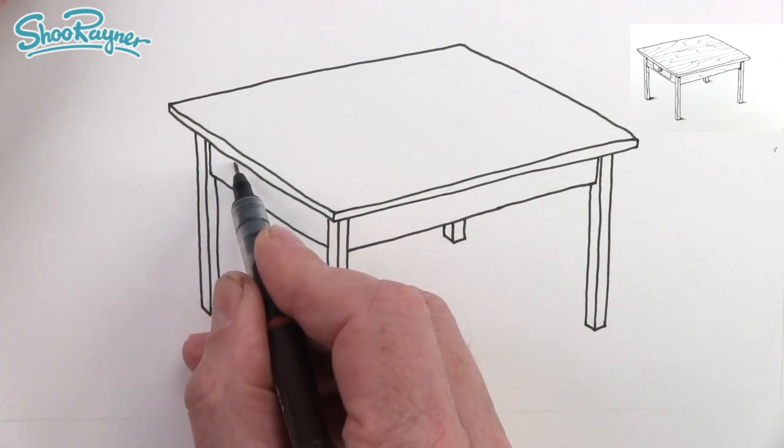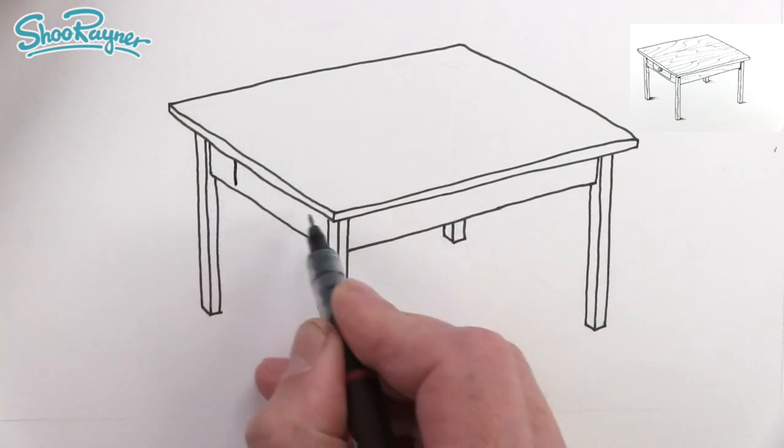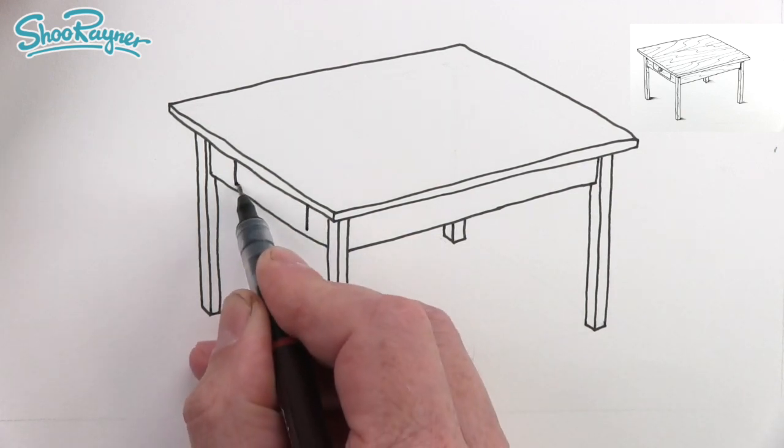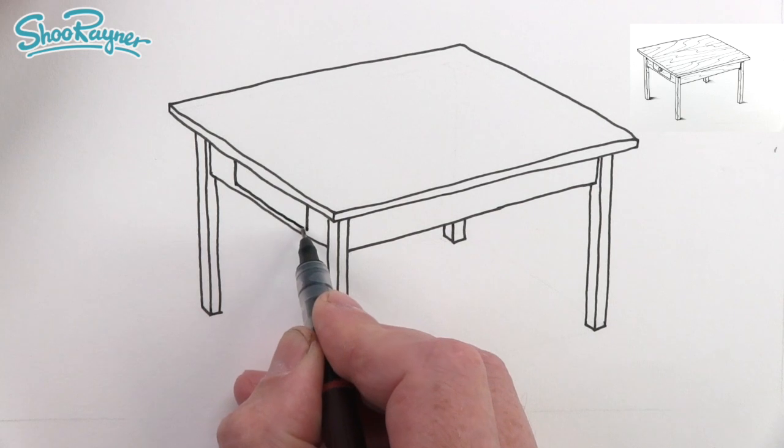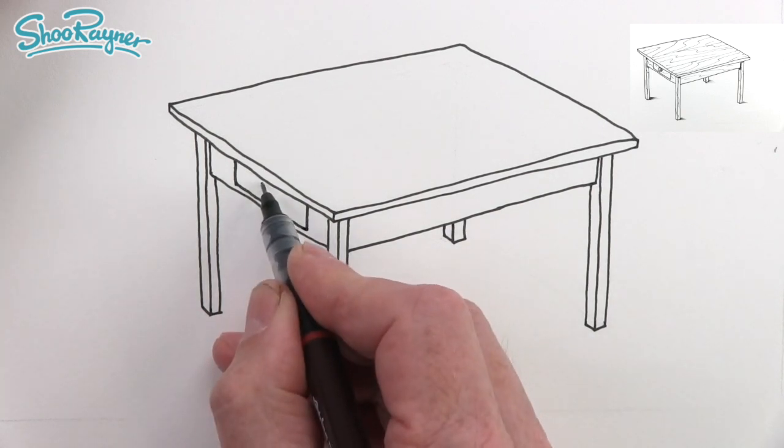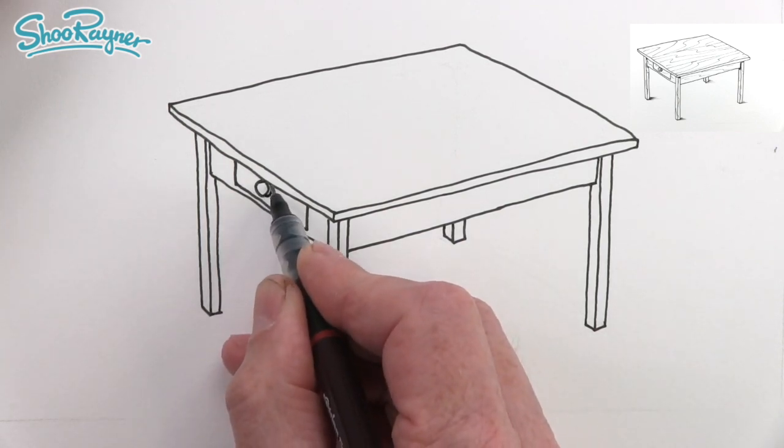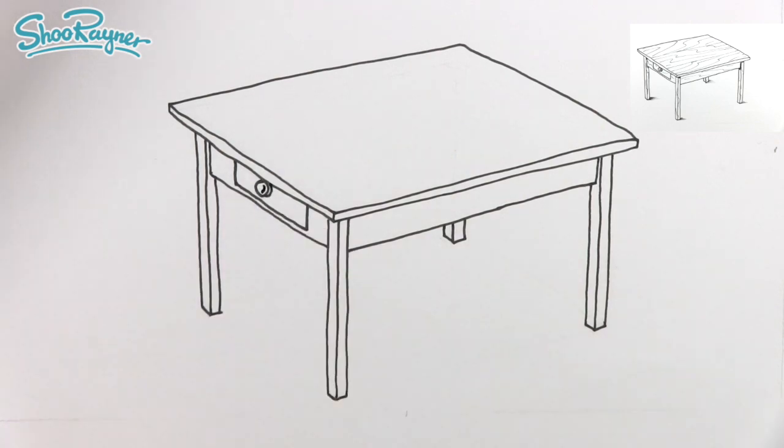Now what we can do here is put in a drawer, so let's draw down there and around about there not quite down to the bottom. Sort of an old farmhouse kitchen table. Then we're going to want to put a little circle, not quite a circle more of an oval really, and another one behind it. We can just put a little curve in there and that'll be the knob for the handle to pull it out.